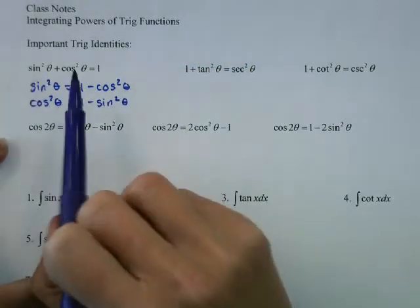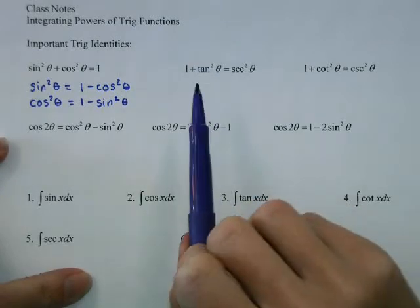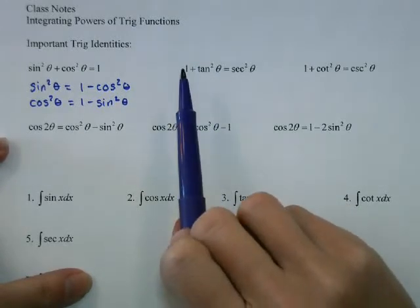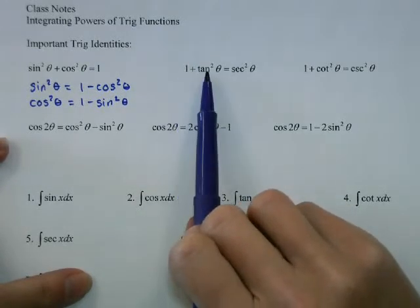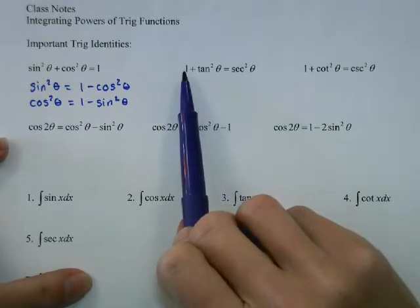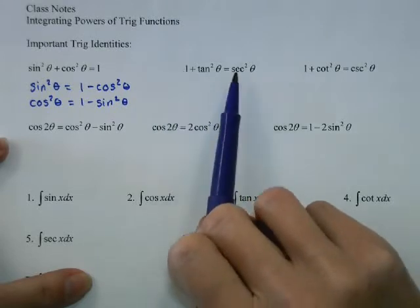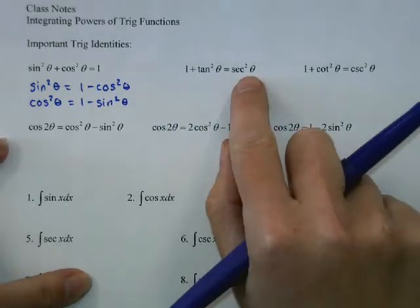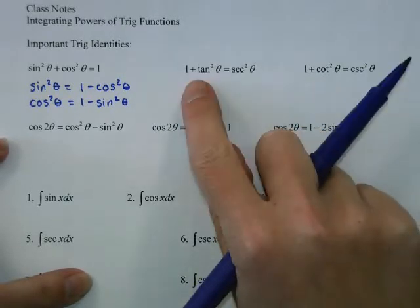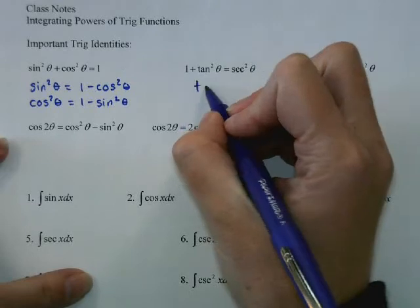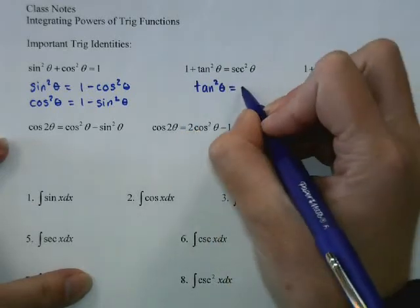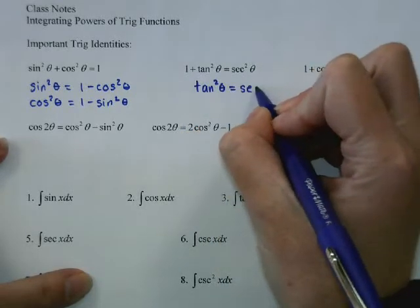If we take this identity and divide everything by cosine, sine divided by cosine is tangent squared, cosine divided by cosine is 1, and 1 divided by cosine is secant. So we can write secant in terms of tangent, and tangent in terms of secant.